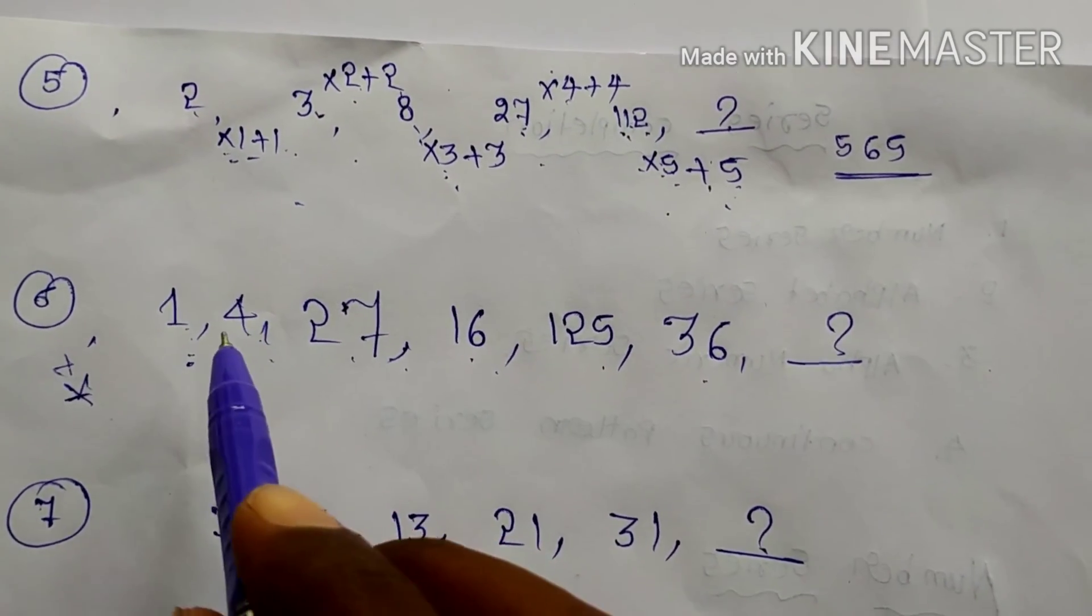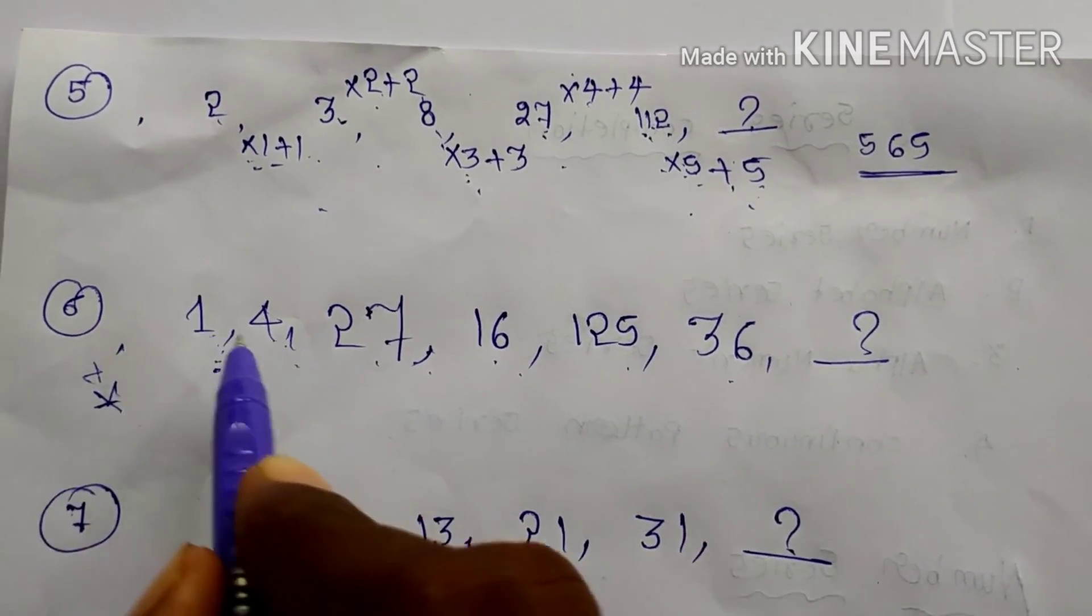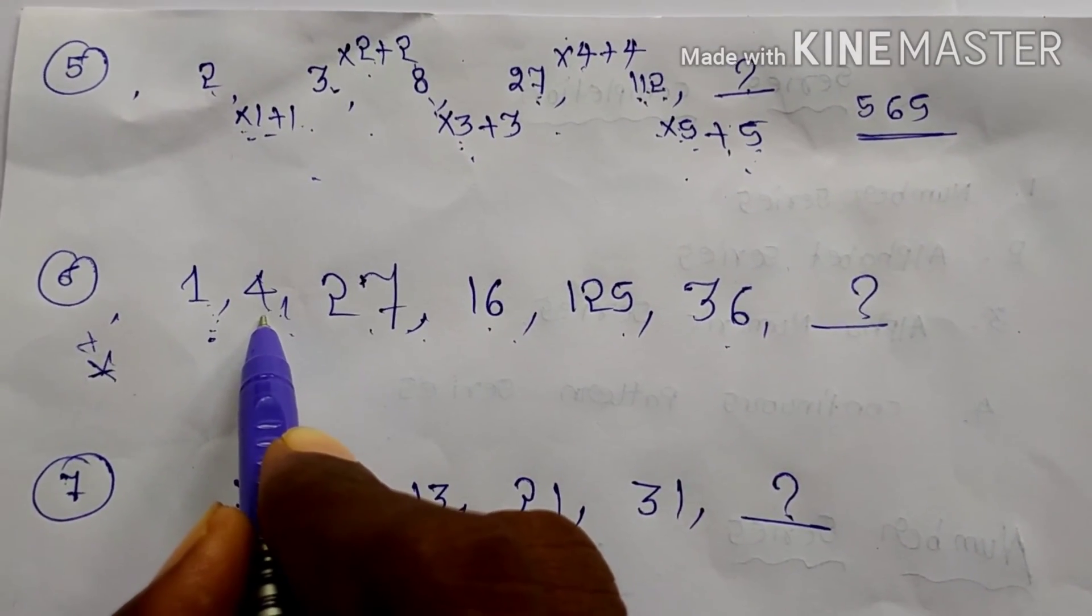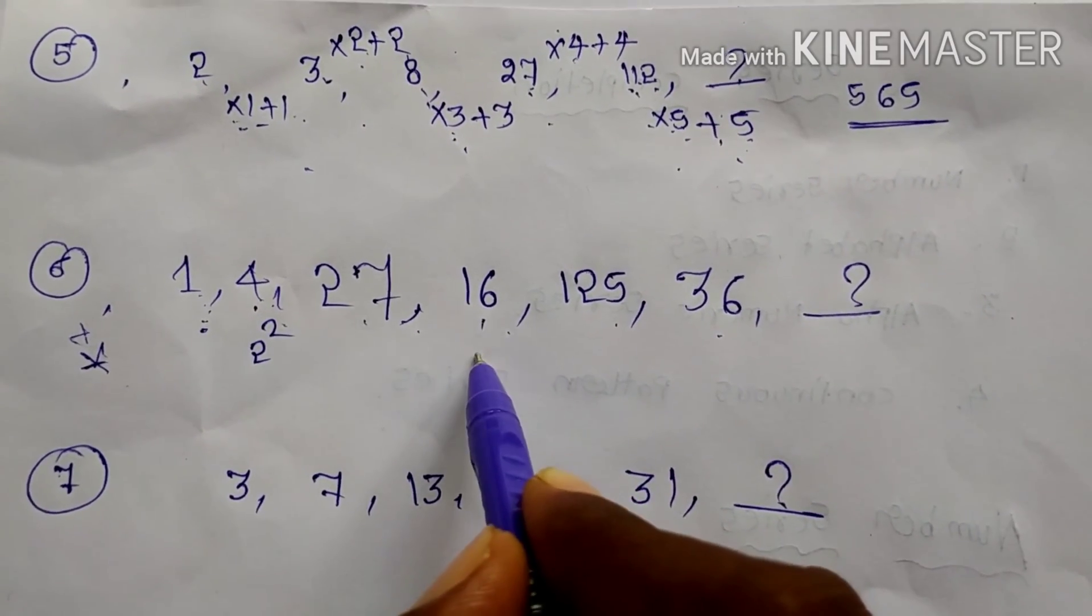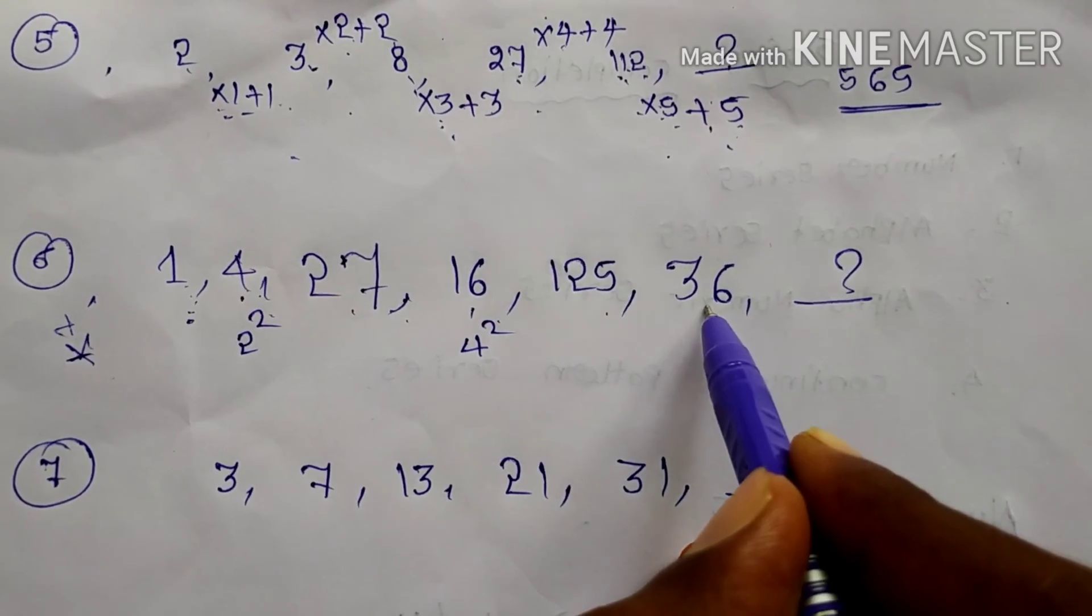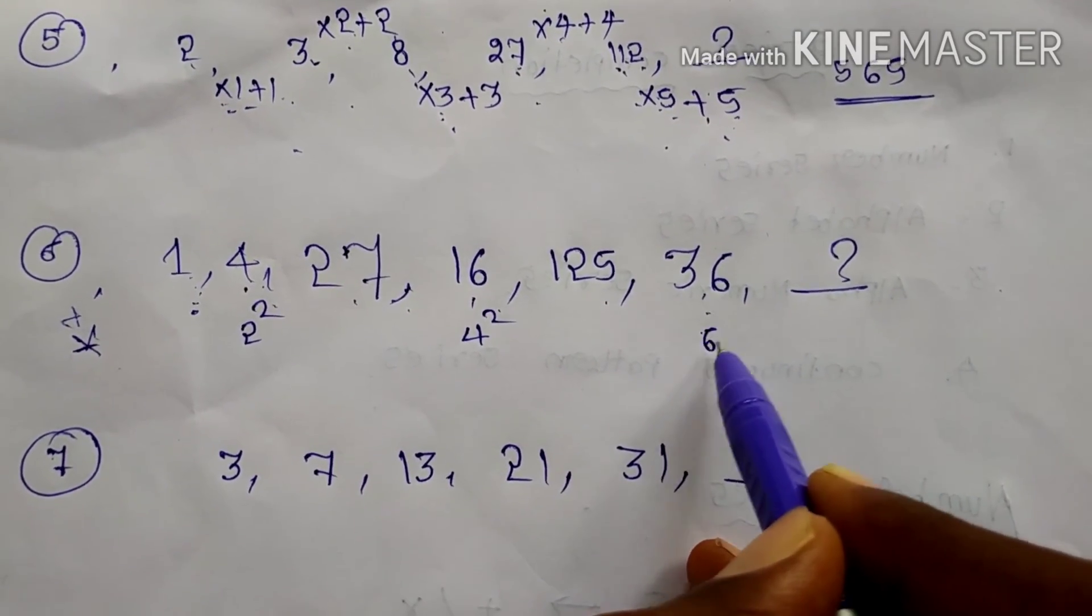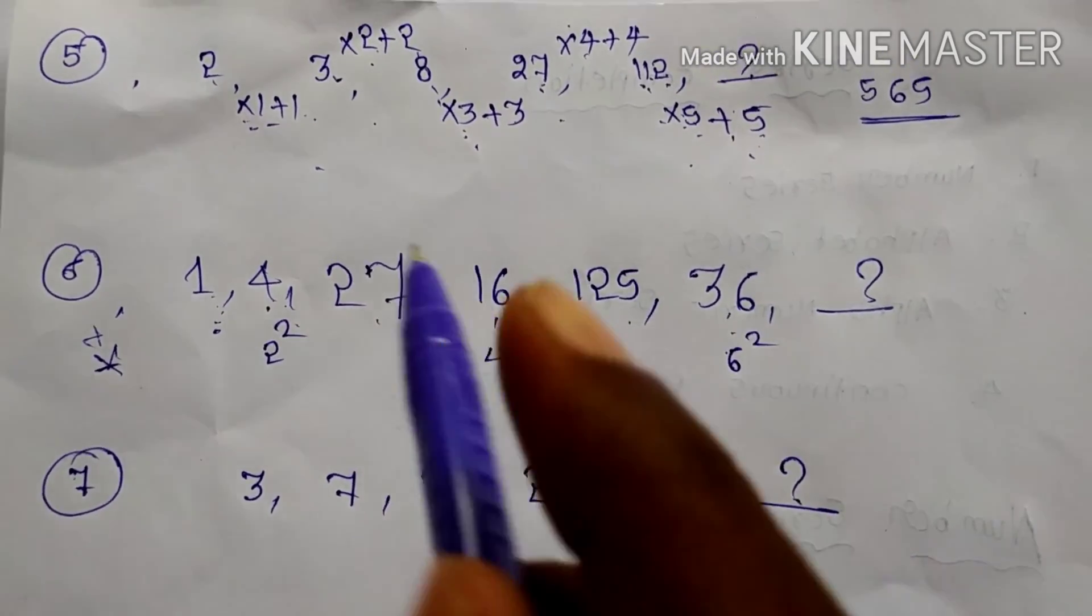Now you can see. First time writing here. 4. 4 can be written as 2 square. Yes or no? 2 square only. 16, 4 square. 36, 6 square. That means these are all alternative numbers are squares.